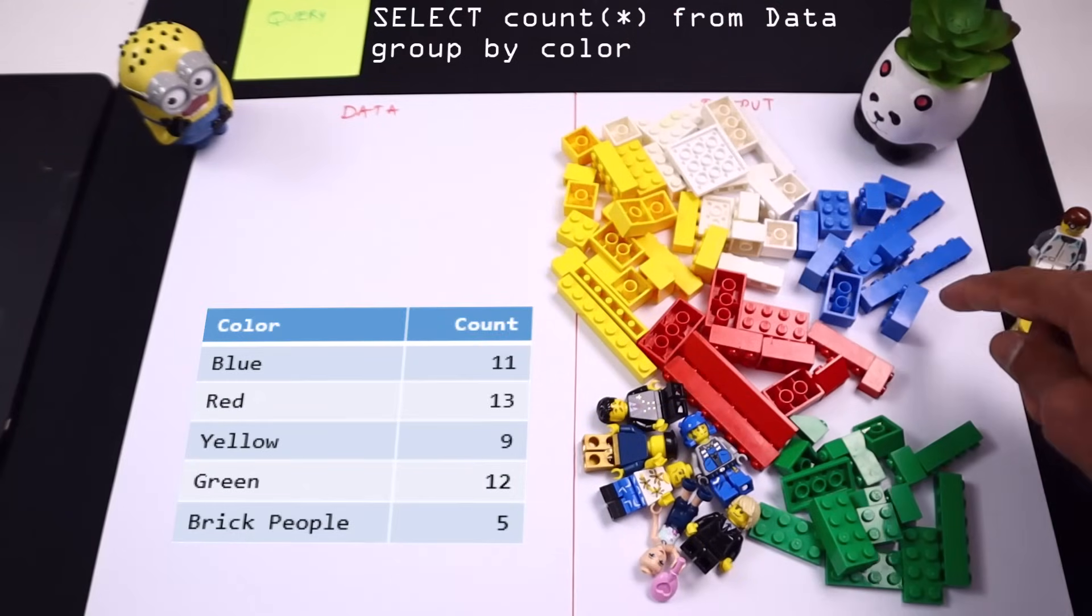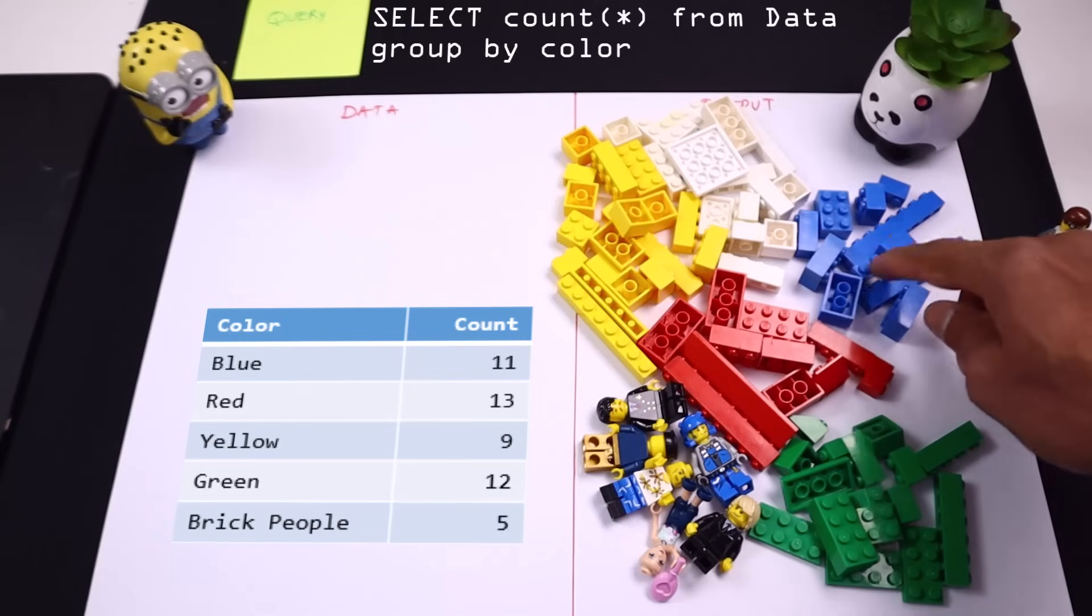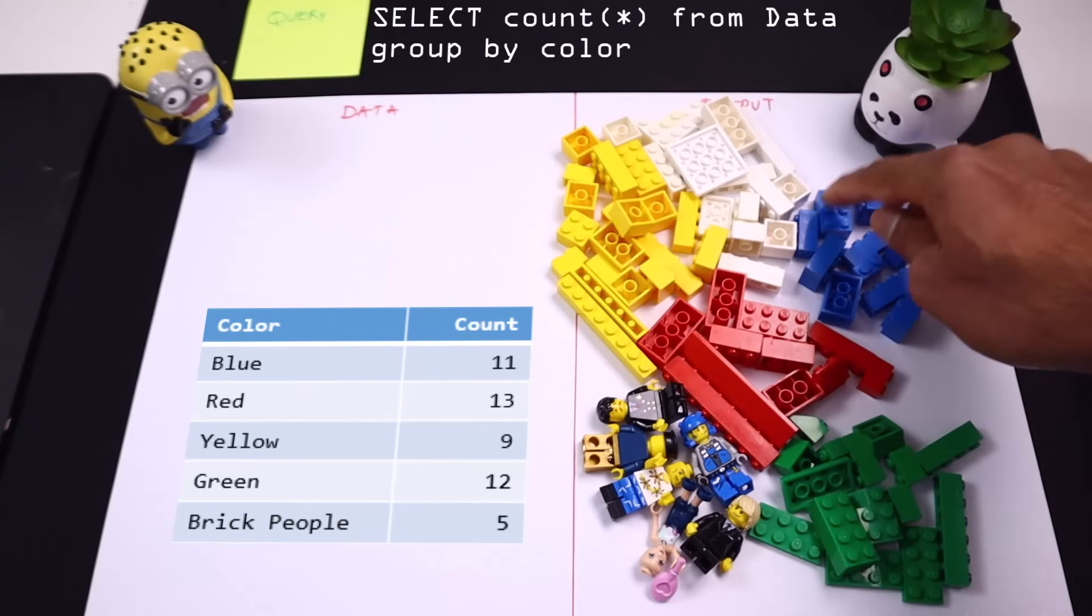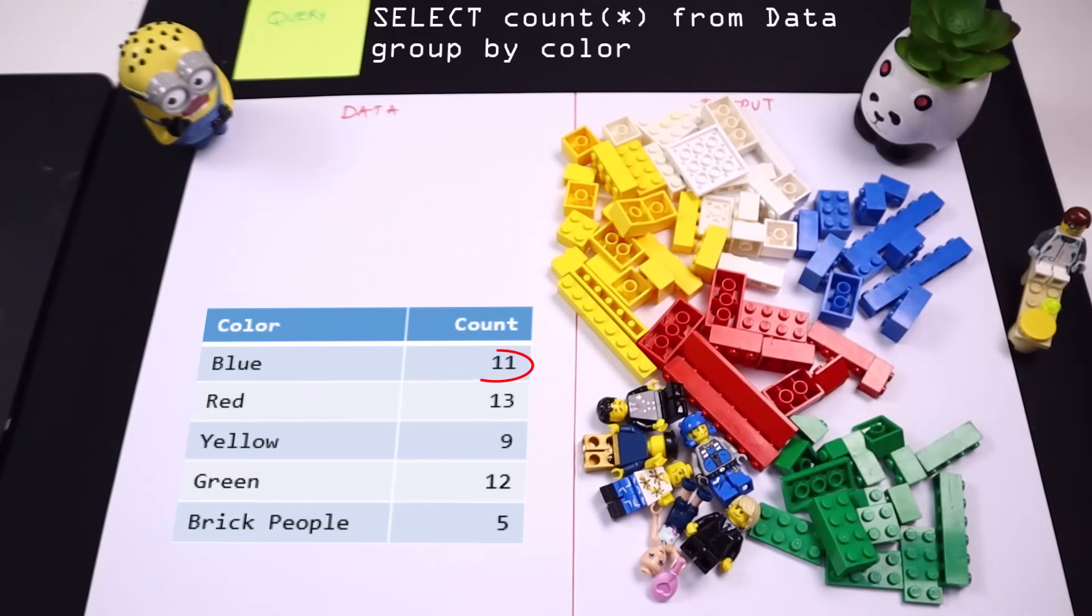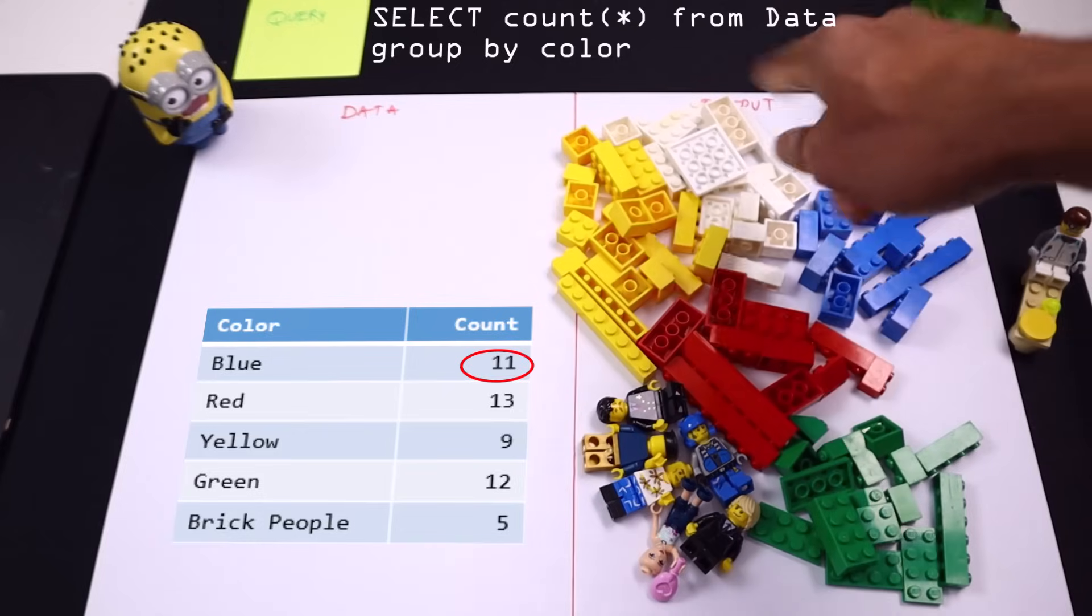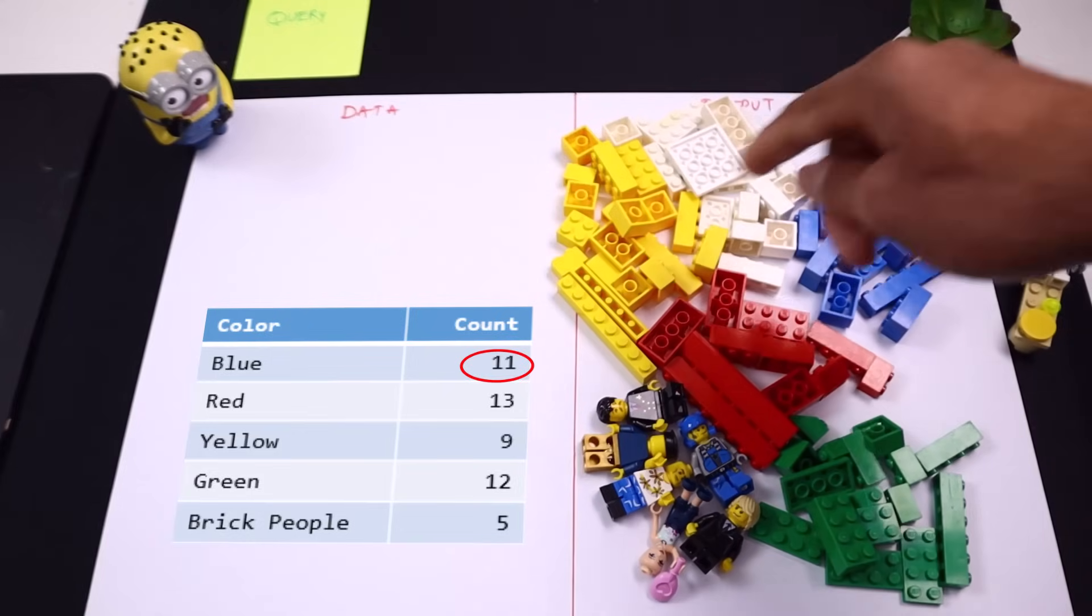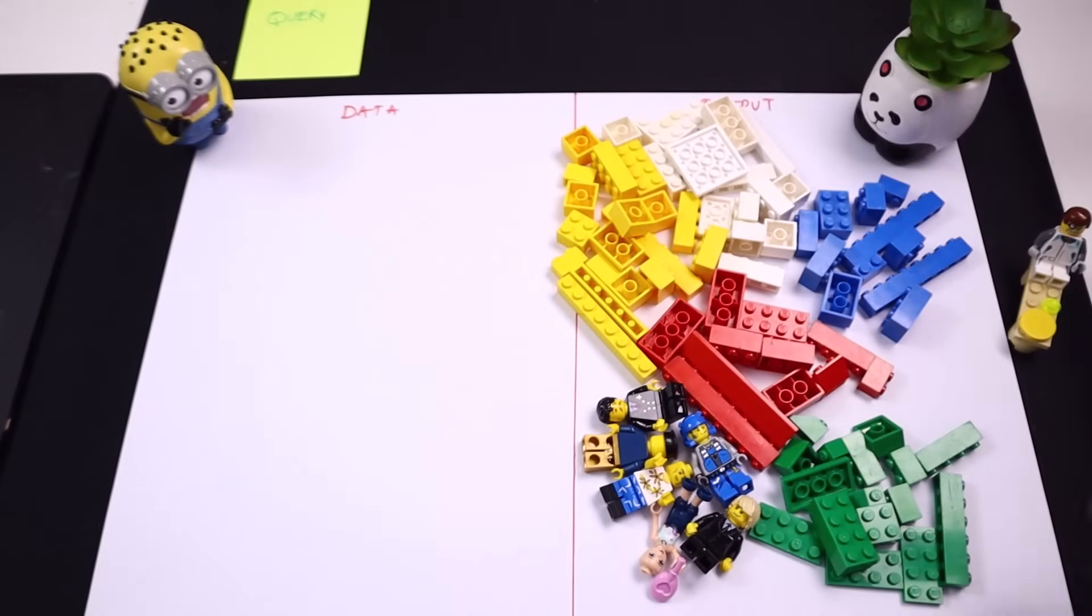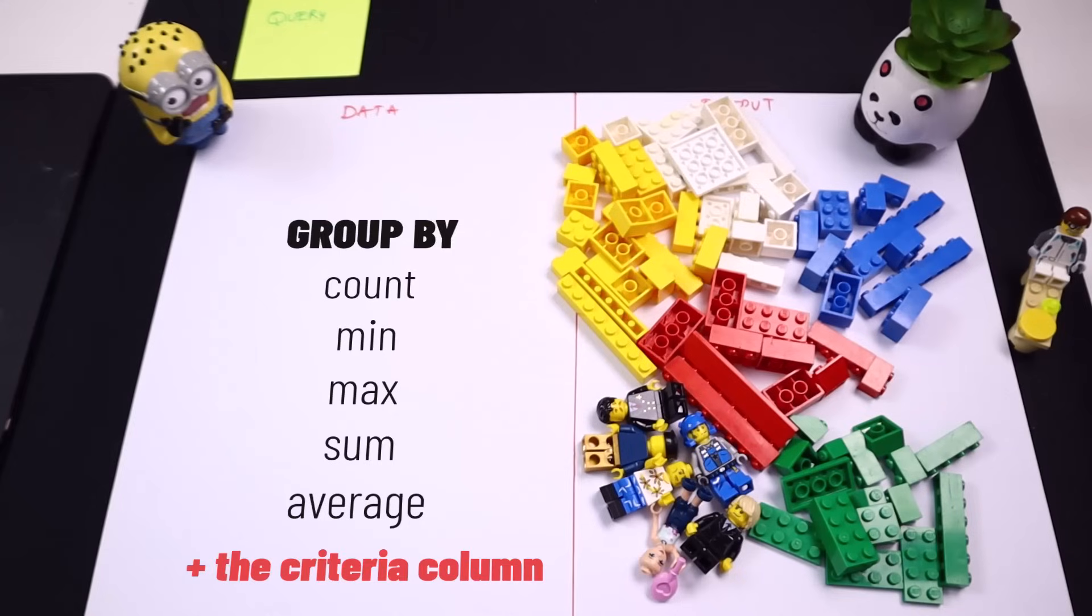For blue, it's going to count up 1, 2, 3, 4, 5, 6, 7, 8, 9, 10, 11. So for blue it will say 11. Likewise, whatever is the number for white, yellow, everything will come up. So when you are grouping by, you can provide summaries like count, minimum, maximum, sum, average, etc., along with any group by criteria as the parameter.